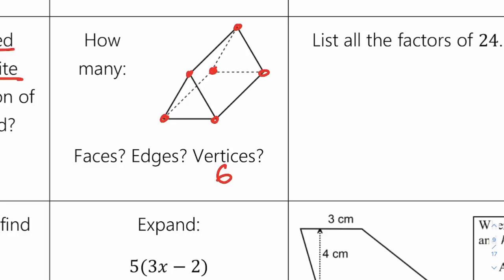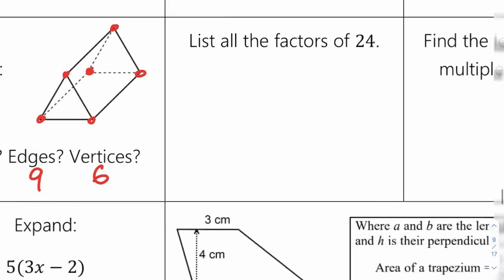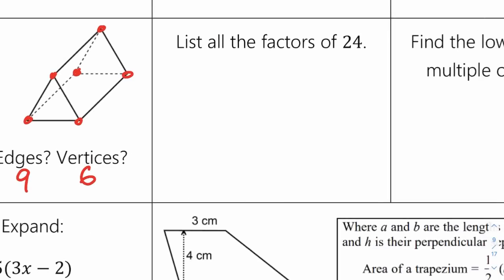So we have edges: 9, faces: 5. List all the factors of 24 — list them in pairs, that works really well so that you don't miss any. So: 1 and 24, 2 and 12, 3 and 8, 4 and 6.